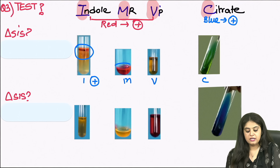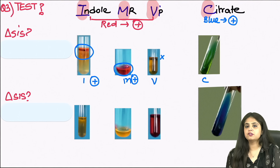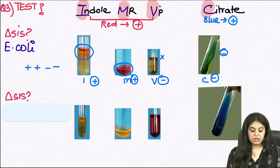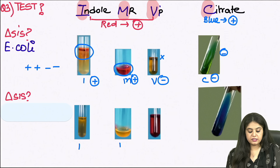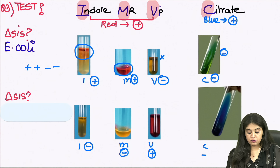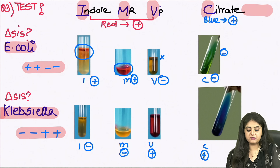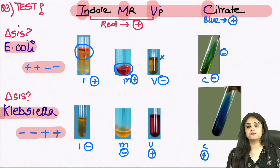Labelling the tubes as IMVIC: I see a red colour so indole is positive; methyl red is also positive; VP shows no red colour so negative; and citrate shows no blue colour so also negative. This pattern — positive, positive, negative, negative — is indicative of E. coli. In the second set of tubes: no red colour for indole, no red colour for methyl red — both negative. VP shows red so positive, and citrate shows blue so positive. This pattern — minus, minus, plus, plus — makes it Klebsiella.